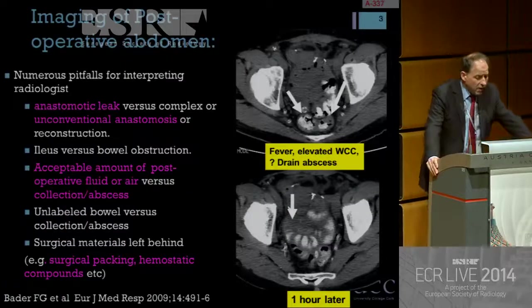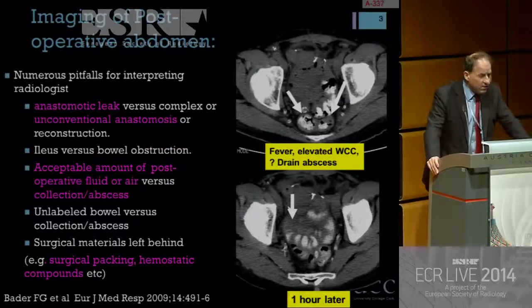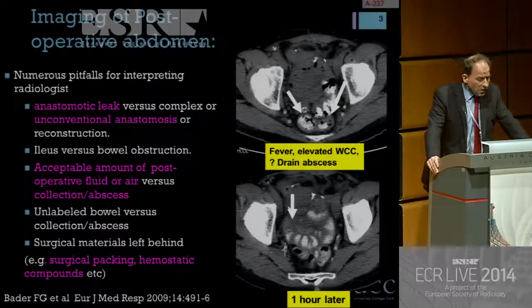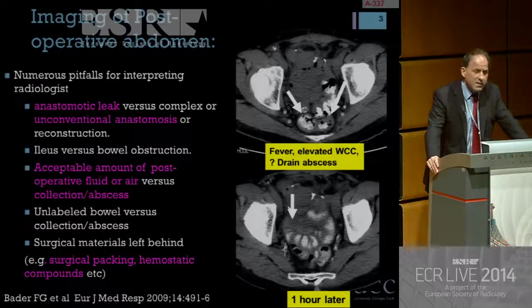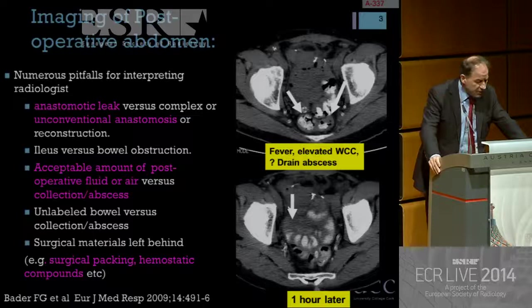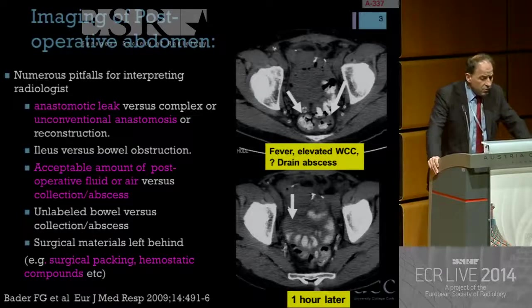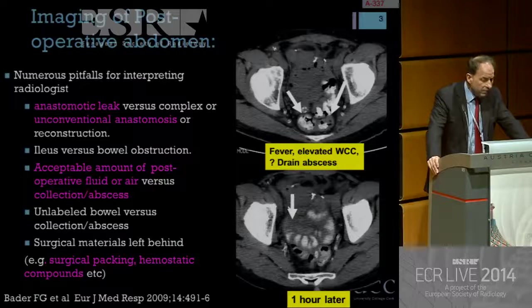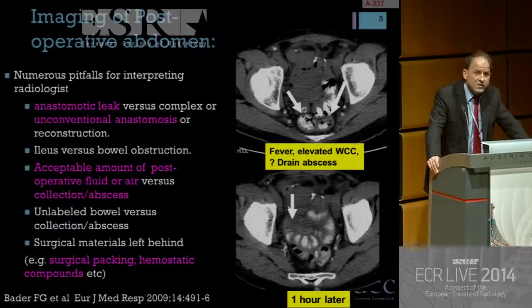Imaging of the post-operative abdomen, as Professor Grasso said, poses numerous pitfalls for the interpreting radiologist. It is our role to try and differentiate an anastomotic leak versus a complex or unconventional anastomosis or reconstruction, and to differentiate ileus versus small bowel obstruction, which can be difficult. We also need to differentiate an acceptable amount of post-operative fluid or air versus a collection or abscess.